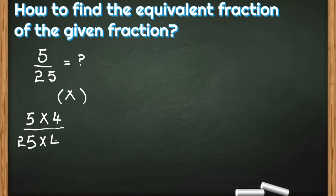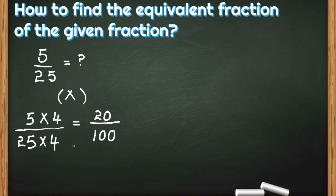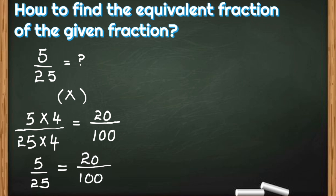Here I am multiplying 5 by 25, both by 4. So 5 fours is 20 — we got 20 in the numerator — and in the denominator, 25 fours is 100. So we got 20 by 100, which is the equivalent fraction of 5 by 25. This was done using the multiplication method.